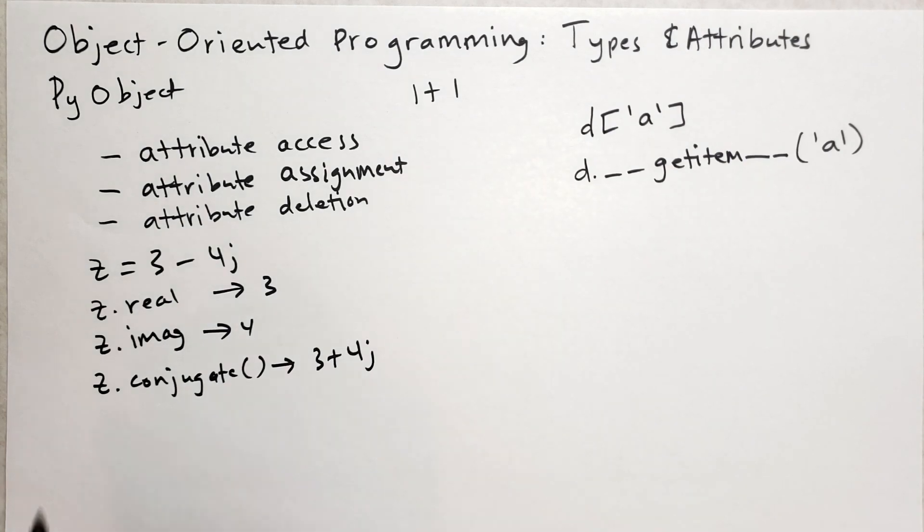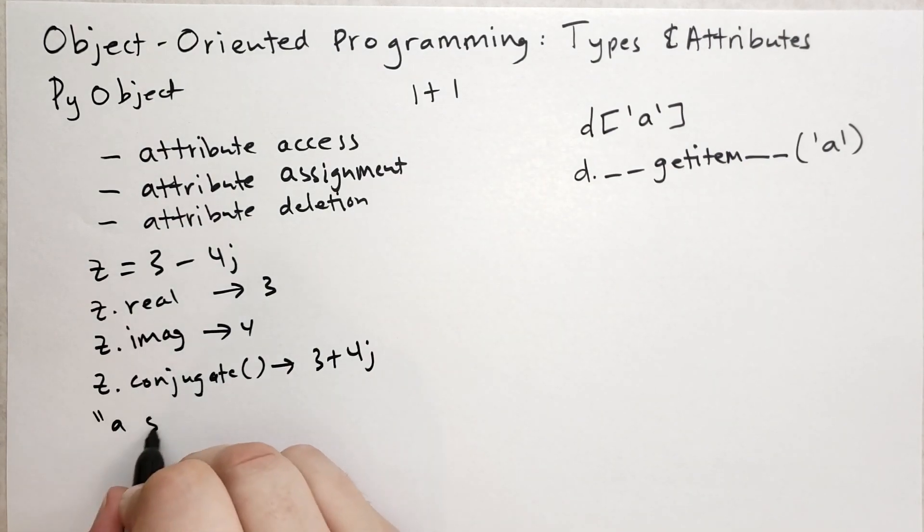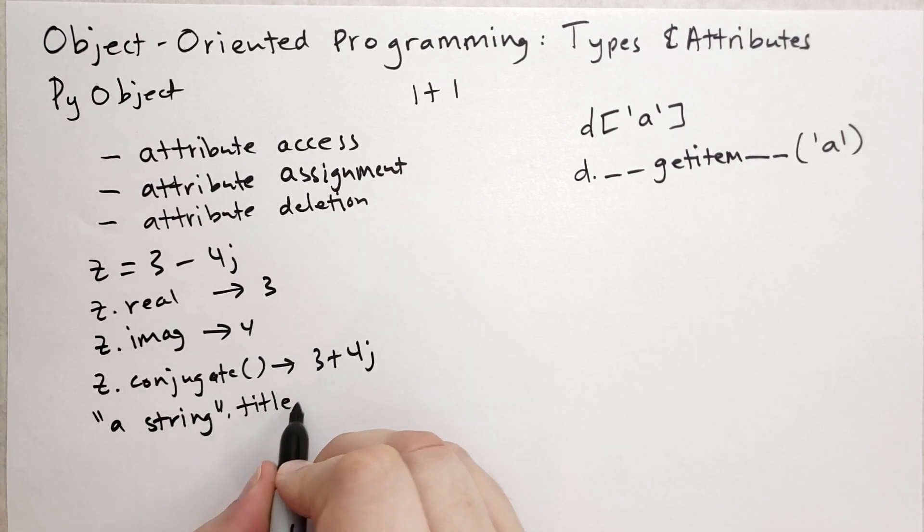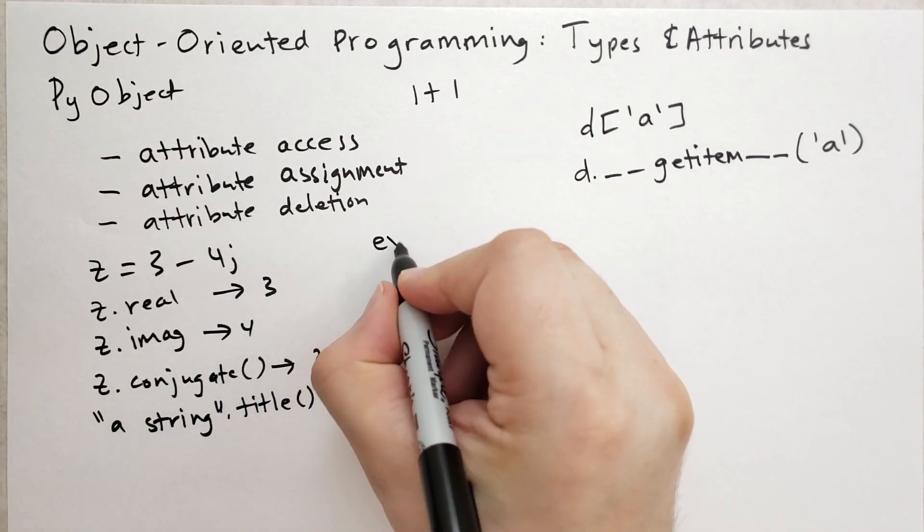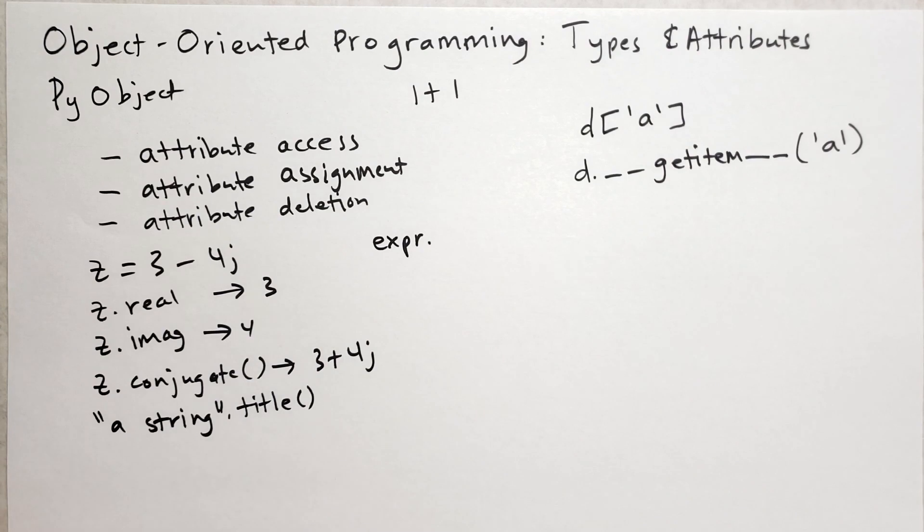And we've seen on strings, you can say like, this is a string or whatever string you want. And you do .title. And that will return a new string. So these things, the dot and then that is the attribute access.